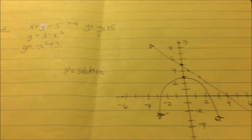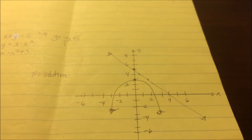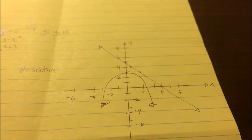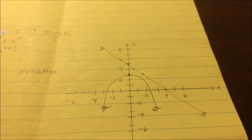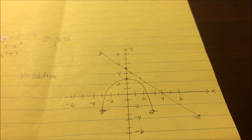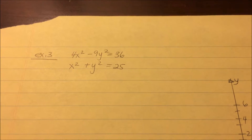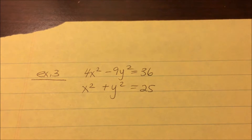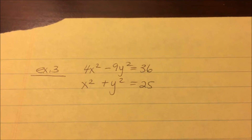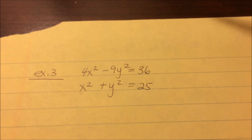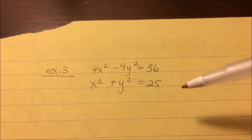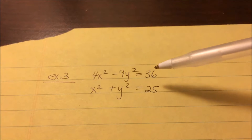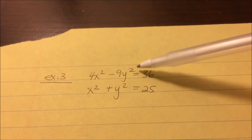This is very similar to the graphing method and system of equations work we did in chapter 6, which ties into this last section of the semester. For example 3, we have 4x squared minus 9y squared equals 36, and x squared plus y squared equals 25. Both have squared terms, so they'll be a circle, ellipse, or hyperbola — not linear or parabolas.